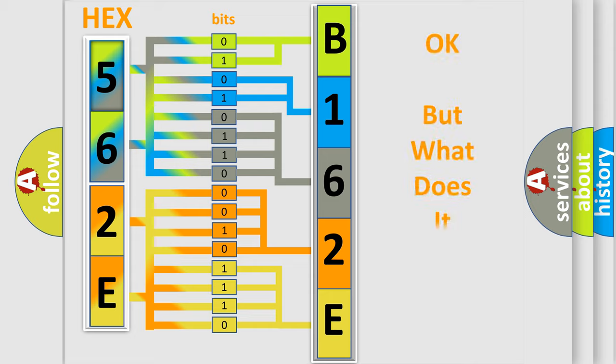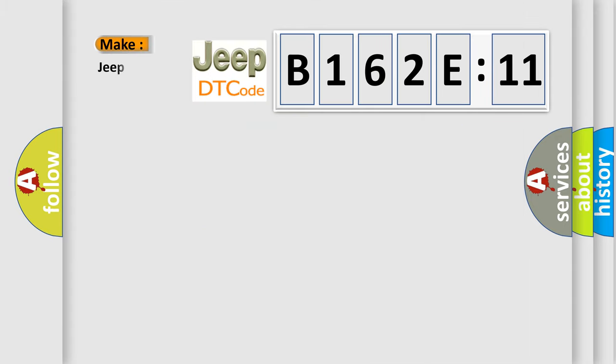The number itself does not make sense to us if we cannot assign information about what it actually expresses. So, what does the diagnostic trouble code B162E11 interpret specifically for Jeep car manufacturers?